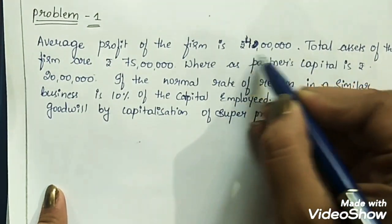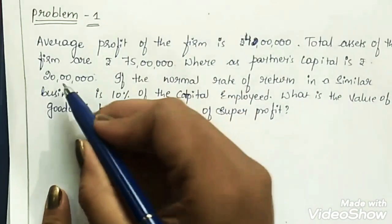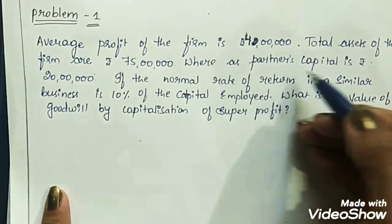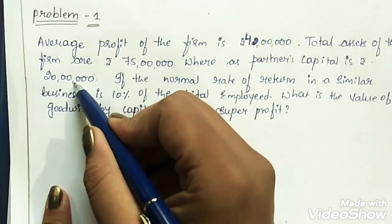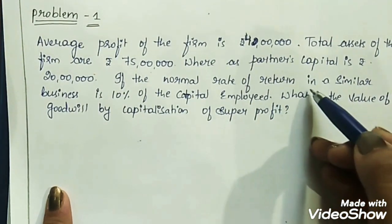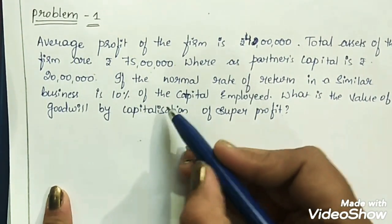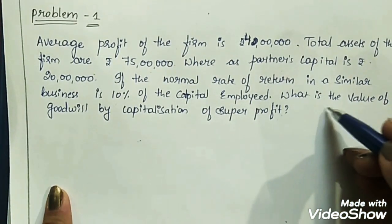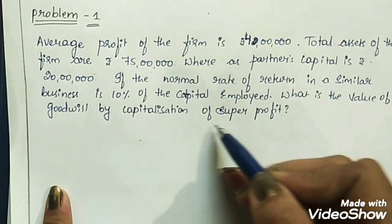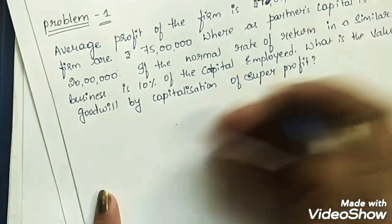Now let's have a look at the problem. The question says: the average profit of the firm is ₹4 lakhs, the total assets of the firm are ₹75 lakhs, and partners' capital is ₹20 lakhs. The normal rate of return in a similar business is 10% of the capital employed. What is the value of goodwill by the capitalization of super profits method?